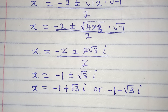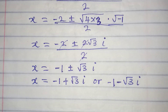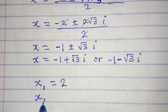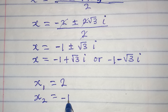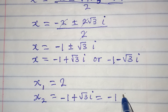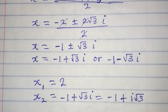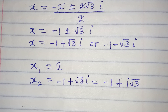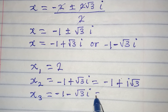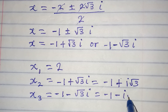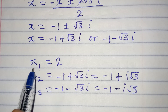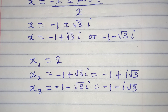Bringing all three solutions together: x1 equals 2, which is the first real solution. x2 equals minus 1 plus square root of 3 i (note that i is not under the square root sign). x3 equals minus 1 minus square root of 3 i, which can also be written as minus 1 minus i root 3. These are the three solutions. The only real one is x1 equals 2; x2 and x3 are complex solutions.